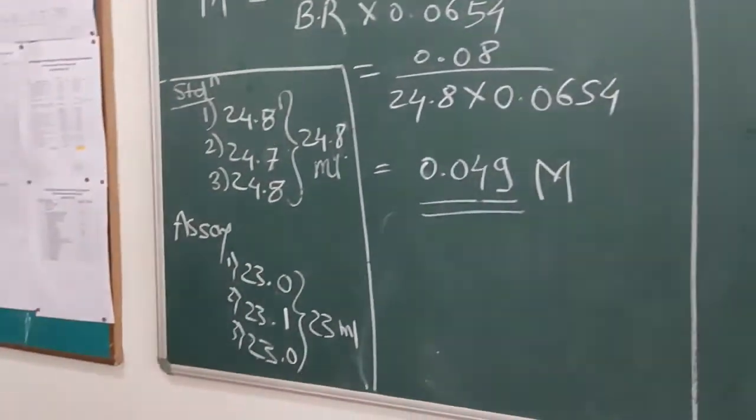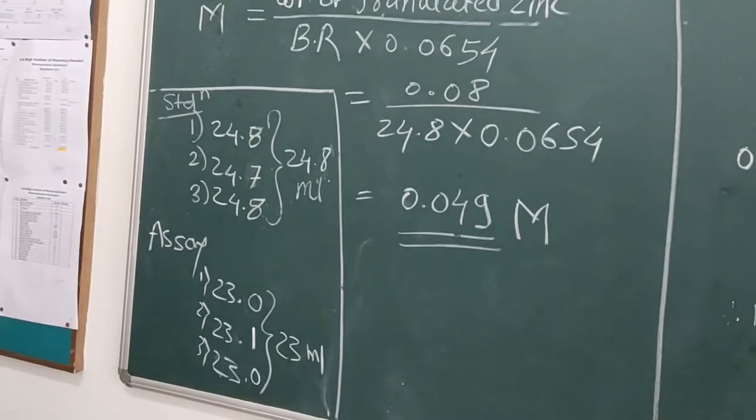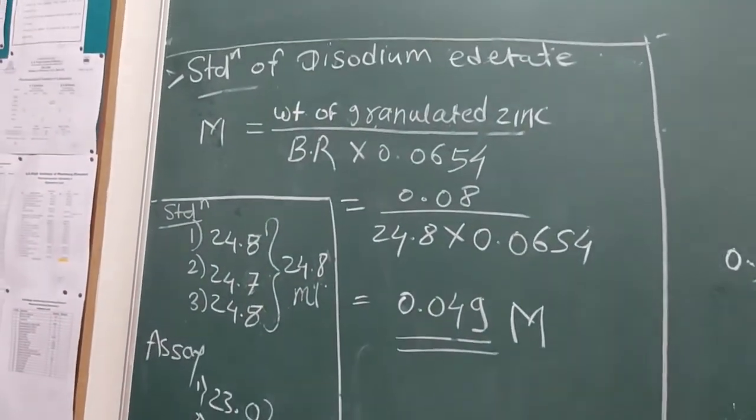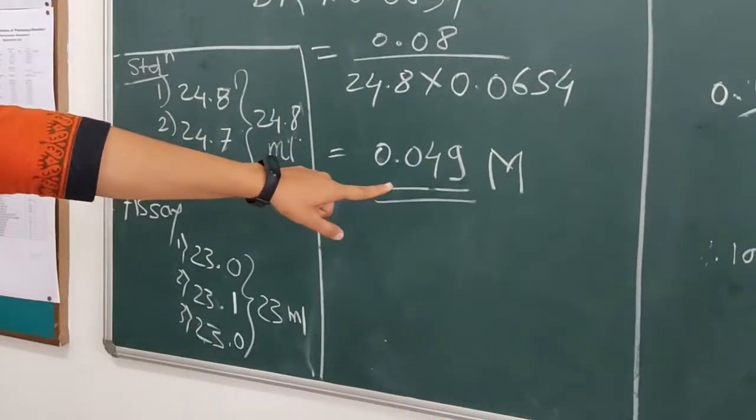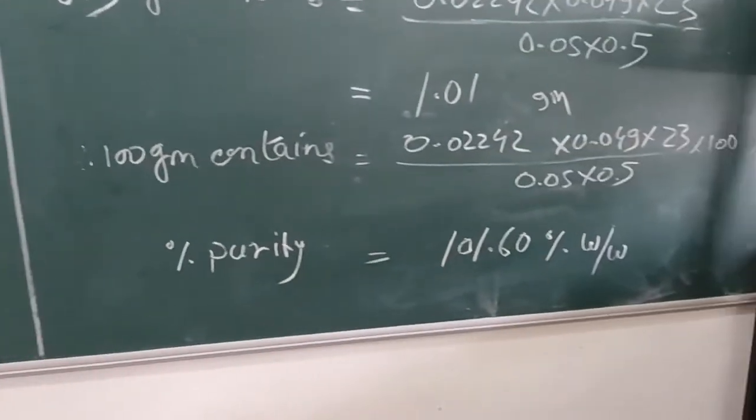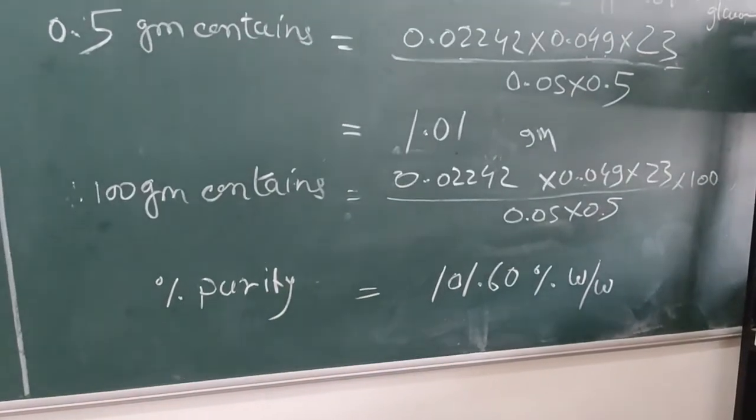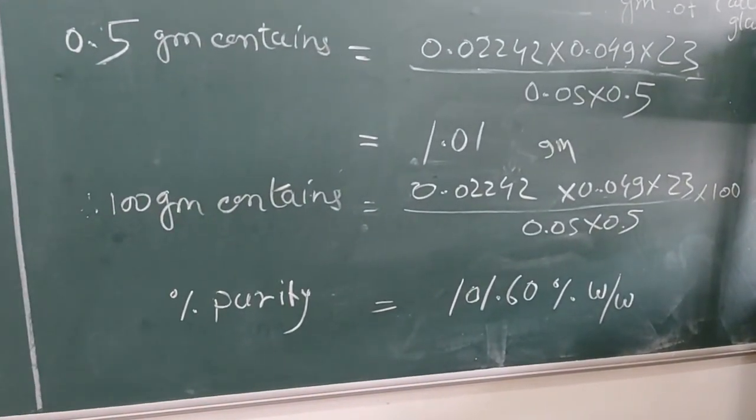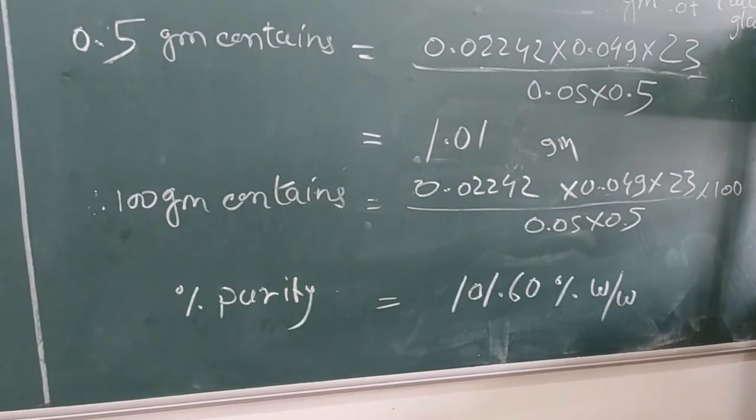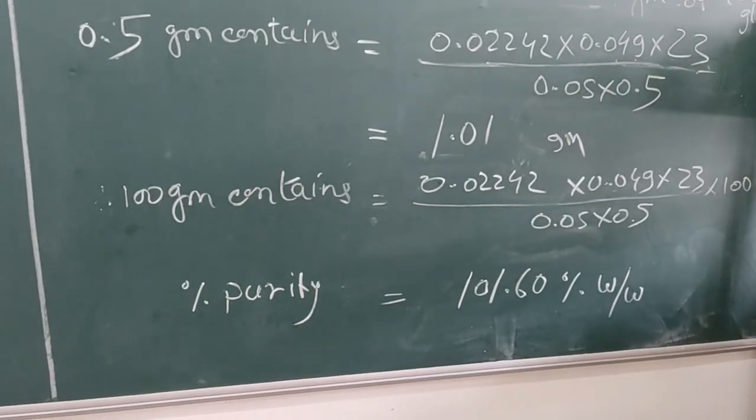Now, move towards result part. The calculated molarity for di-sodium EDTA was found to be 0.049 molar. And the percentage purity of calcium gluconate is 101.60% weight by weight of calcium gluconate. Thank you.